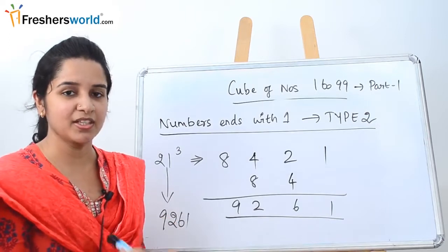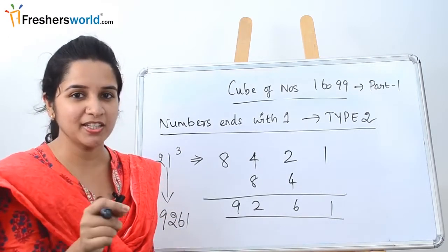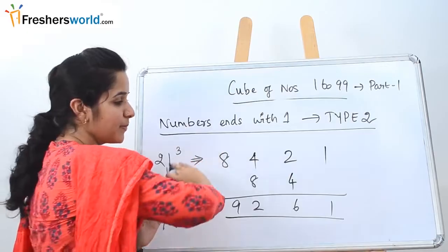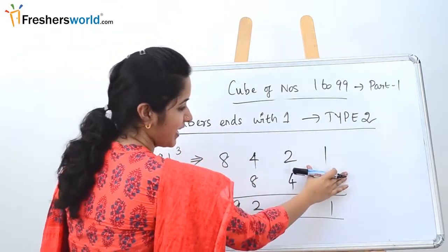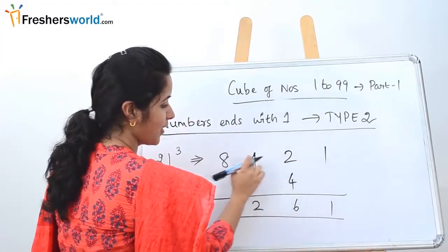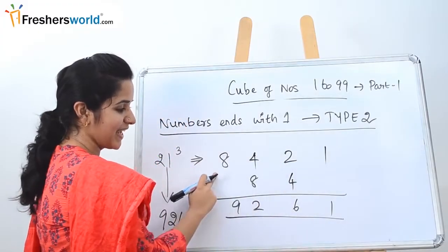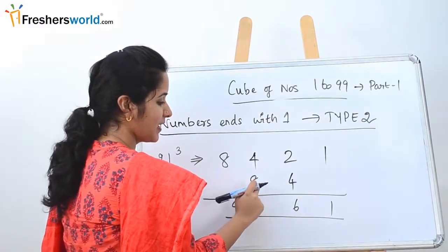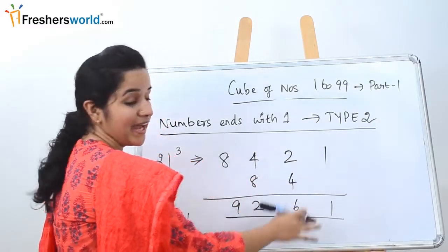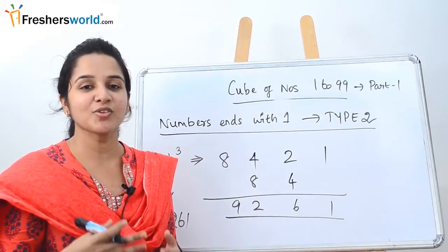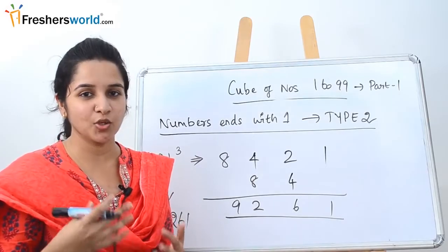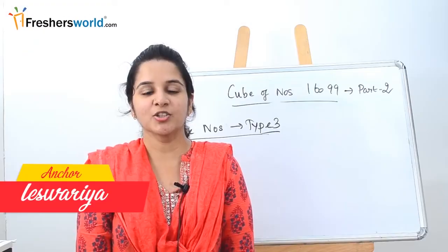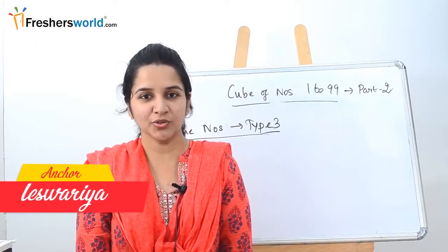We solve it the same way as Type 1, with one minor change: instead of putting the original number in the first two positions, we put it in the last two positions. So 21 goes at the end; 2 squared is 4, 2 cubed is 8. Multiply the middle two digits by 2, then add — and you easily get the cube for numbers ending with 1.